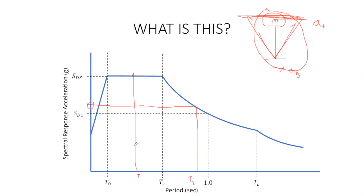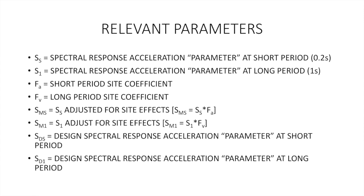Before we get more into this, let me talk about the various parameters associated with the response spectrum as shown in IBC and ASCE 7-10. We have SS and S1, which are response acceleration parameters at the short and long periods, respectively — the short period being 0.2 seconds and the long period being 1 second. Note that I have 'parameter' in quotations, as we're not dealing with the exact response acceleration of a single degree of freedom system. Rather, we are dealing with a pseudo-acceleration, which approximates that acceleration, and it has been shown to be good enough for design purposes.